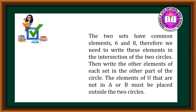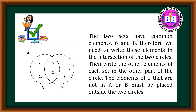The two sets have common elements, which are 6 and 8. Therefore, we need to write these elements in the intersection of the two circles. Then write the other elements of each set in the other part of the circle. The elements of the universal set that are not in Set A or Set B must be placed outside the two circles.